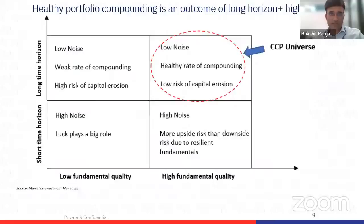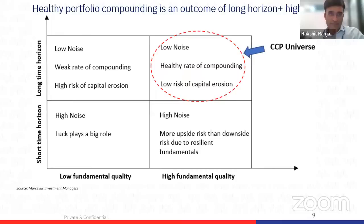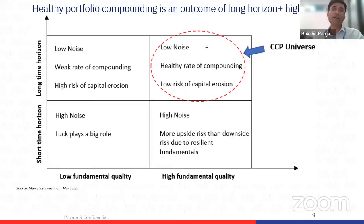The main message of this exercise — and we are conveying it repeatedly in this webinar — is that in the last 12 months there has been a lot of noise, a lot of questions around capital erosion over a six-month or three-month horizon in a portfolio like CCP. There has been a lot of volatility month to month. But the moment you increase the time horizon and keep the quality of portfolio fundamentals high, you are positioned in the best quadrant where luck plays less of a role and fundamentals play a very significant role.